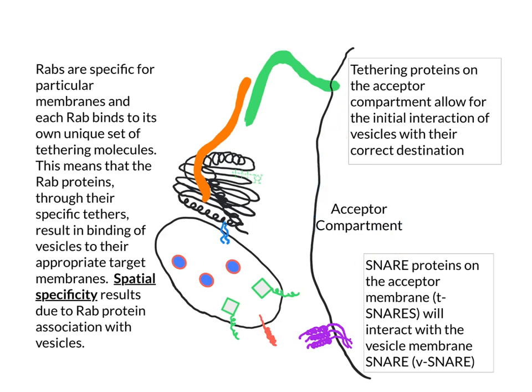The vesicle carries cargo — transmembrane proteins and soluble cargo — along with a SNARE protein that will play a role in fusion at the acceptor compartment. It is the RAB with its associated tethering molecules that directs transport toward the acceptor compartment. Once the two tethers connect, the vesicle is brought close enough to the acceptor compartment that SNAREs can play a role in fusion, providing spatial specificity.